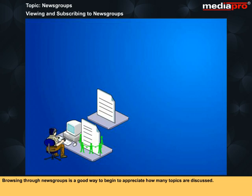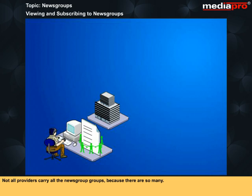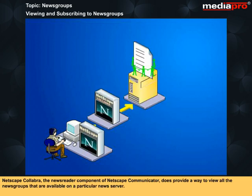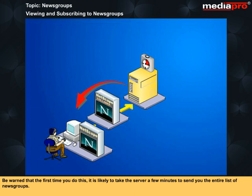Browsing through newsgroups is a good way to begin to appreciate how many topics are discussed. Not all providers carry all newsgroups because there are so many. Netscape Collabra, the newsreader component of Netscape Communicator, does provide a way to view all the newsgroups that are available on a particular news server. Be warned that the first time you do this, it is likely to take the server a few minutes to send you the entire list of newsgroups.